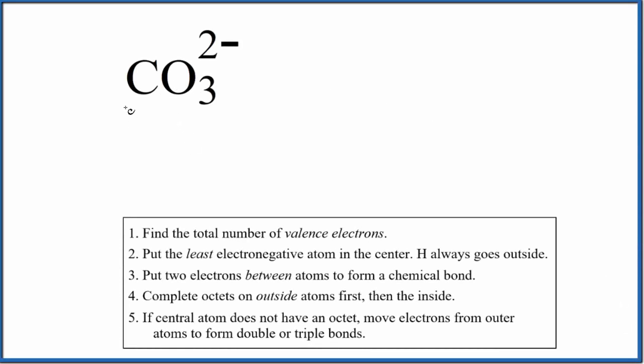Let's draw the Lewis structure for CO3 2-. This is the carbonate ion. The first thing we do when we draw Lewis structures is find the number of valence electrons.